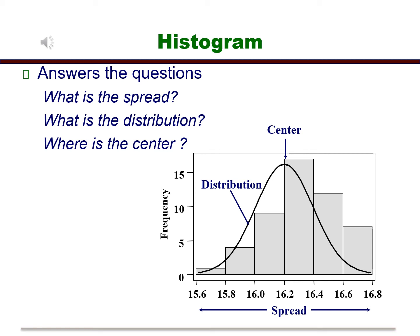In the case of our cereal box weights, the center is at about 16.3. The range of the data is from 15.6 to 16.8.